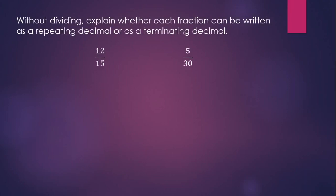Without dividing, explain whether each of these fractions can be written as a repeating decimal or as a terminating decimal. In either case, we have to make sure the fraction is simplified before we make a decision about whether it repeats or terminates. And both of these fractions can be simplified. Then we look at the denominator of the simplified fraction. And we look for the prime factors of the denominator. In the case of 4 fifths, the prime factor of the denominator is 5. And as long as the denominator's prime factors are only 2 or 5 or any combination of 2 or 5, we have a terminating decimal.